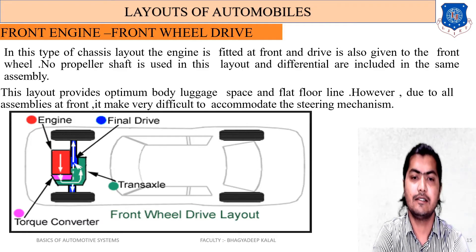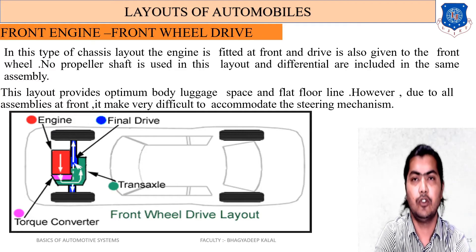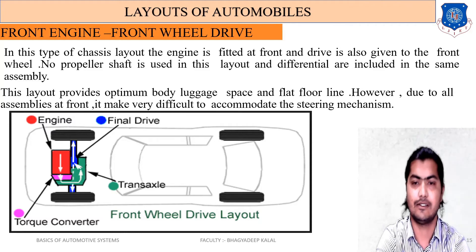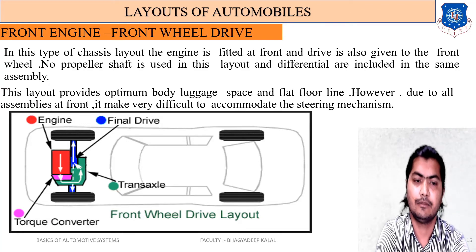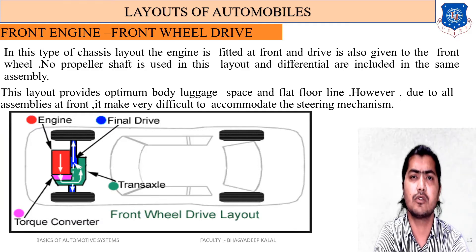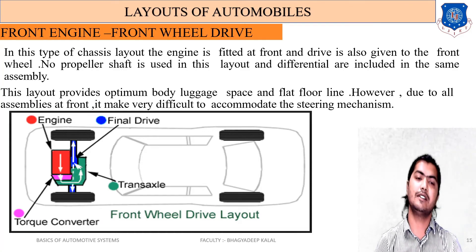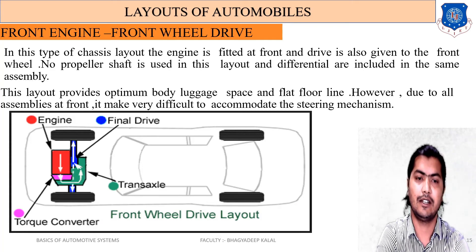This layout provides optimum body luggage space — meaning good carrying capacity for luggage — and a flat floor plan, meaning the height from the ground floor to the axle is very low. However, because all the mechanical assemblies are at the front, it makes it very difficult to accommodate the steering mechanism, as the engine, clutch, gearbox, and differential are all mounted on the front side, making steering integration complicated.